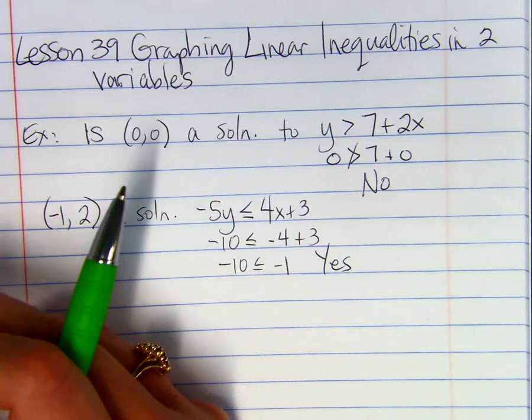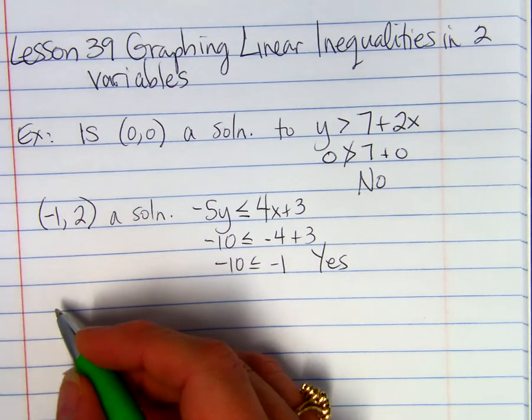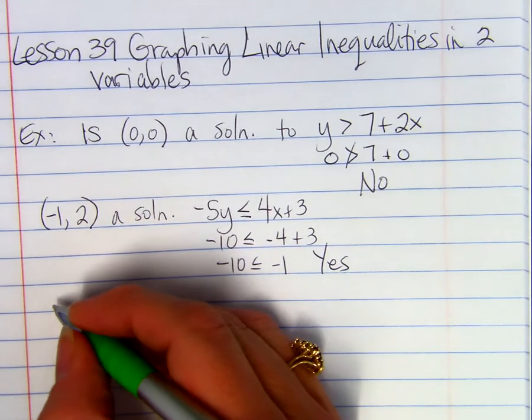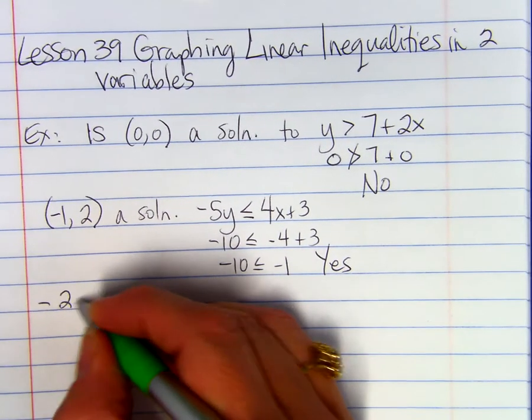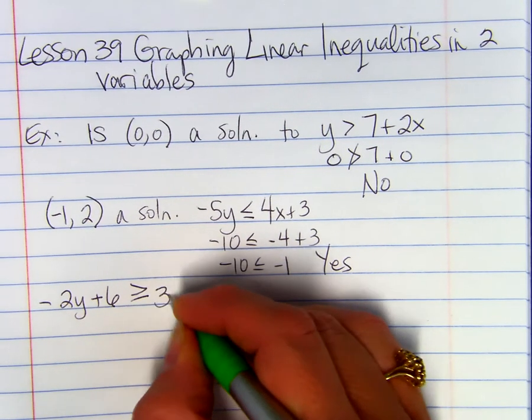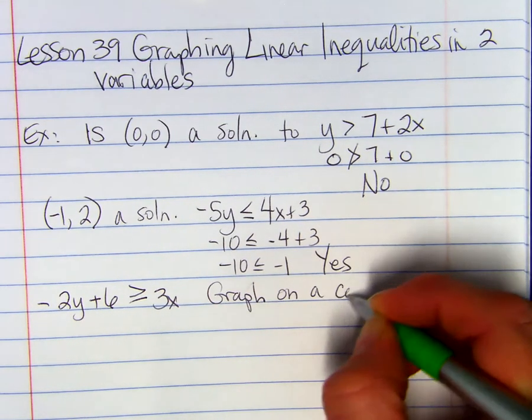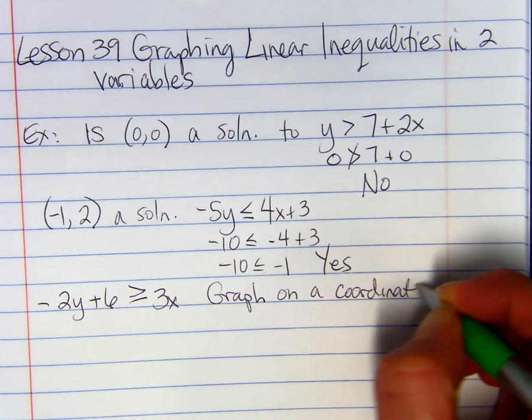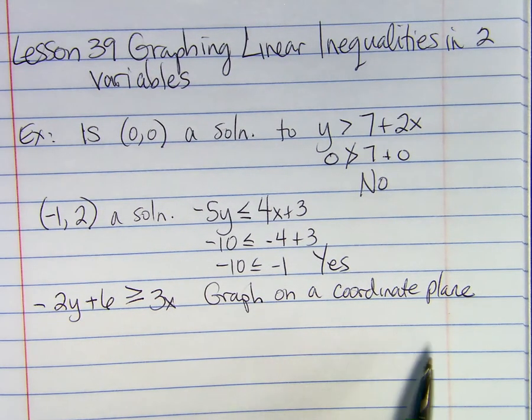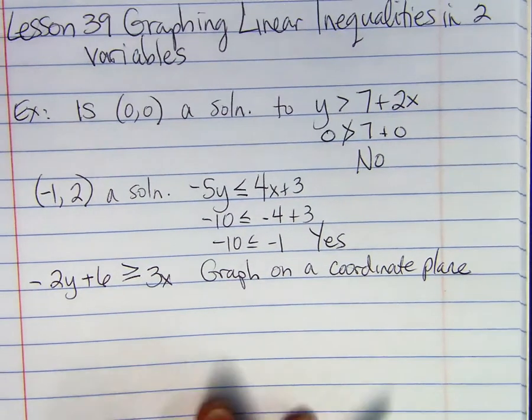Okay. So now if I wanted to graph this inequality, you're going to have part of your graph will be shaded. So negative 2y plus 6 is greater than or equal to 3x. So we're going to graph on a coordinate plane. You know it's going to be on a coordinate plane because there's an x and a y.